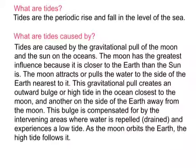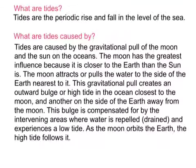Starting off with a definition of what tides are: your textbook and your chief examiner defines tides as the periodic rise and fall in the level of the sea — periodic meaning regular — and we get two high tides a day. Tides are caused by the gravitational pull of the moon and the sun on the oceans. Because the moon is closer to the earth, it has the greatest influence.